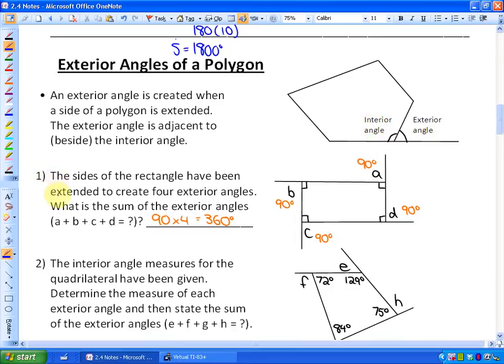So for question number one, it says the sides of a rectangle have been extended to create four exterior angles. What's the sum of the exterior angles? Well, we know if it's a rectangle, that its supplement is also 90 degrees. So A would be 90 degrees, B would be 90 degrees, C would be 90 degrees, and D would be 90 degrees. So all of those exterior angles add up to 360.